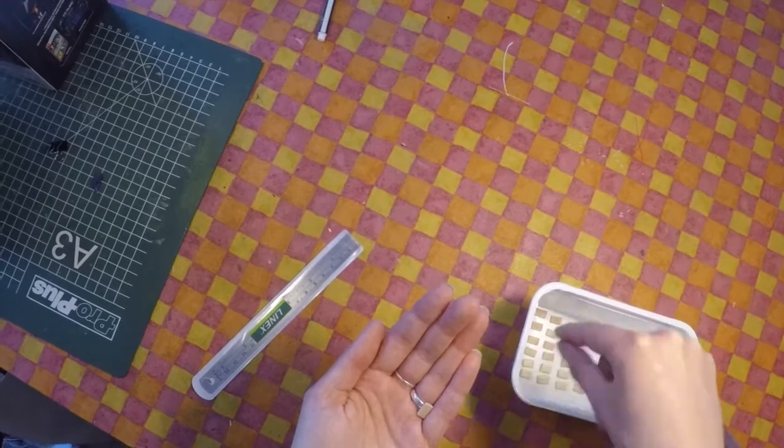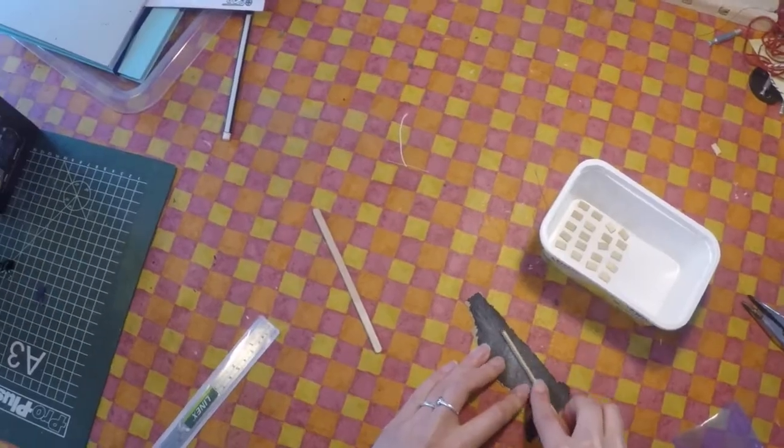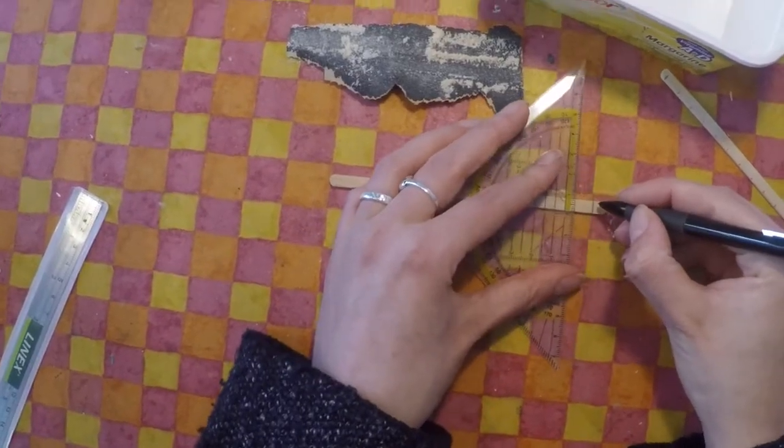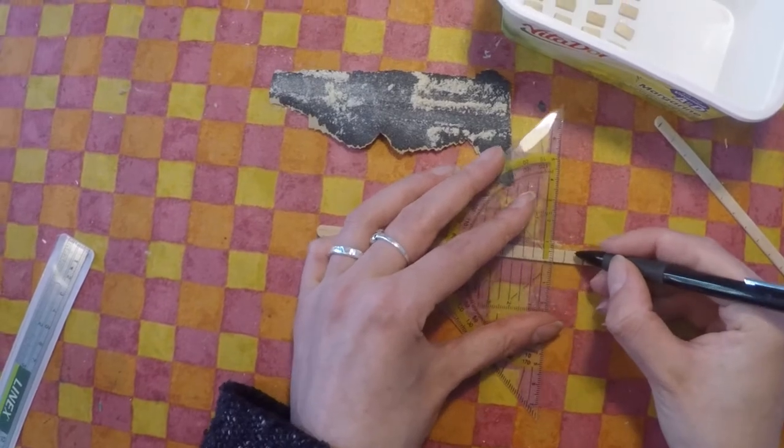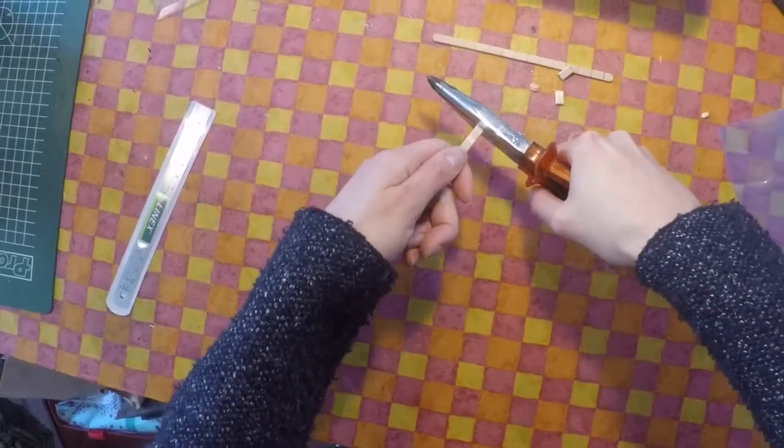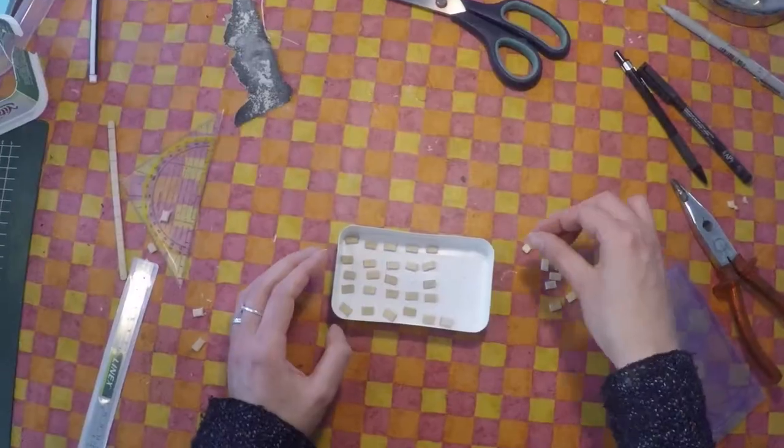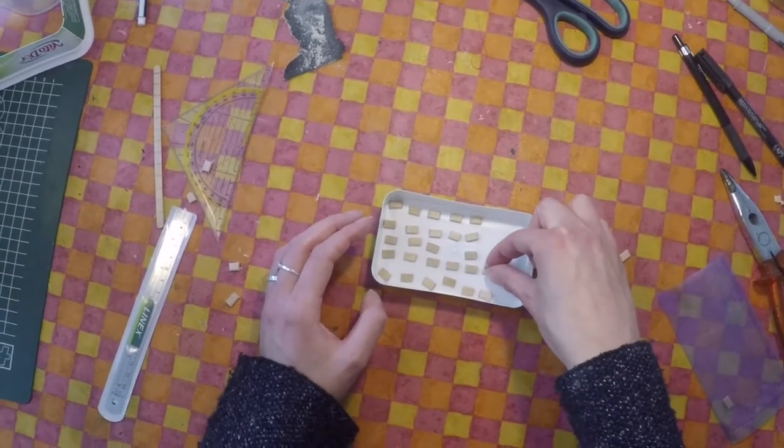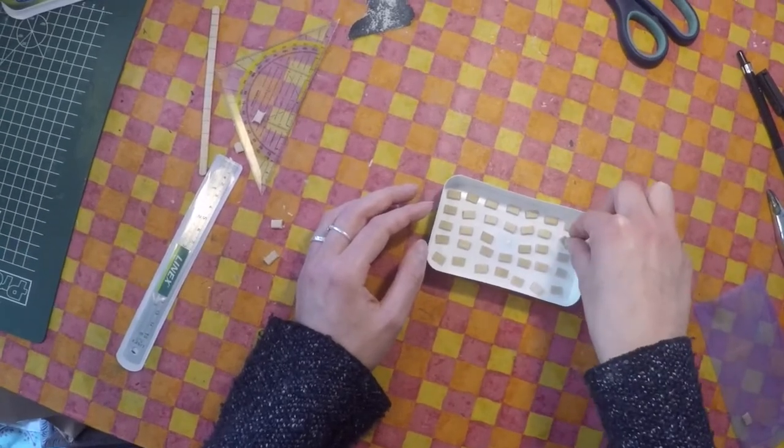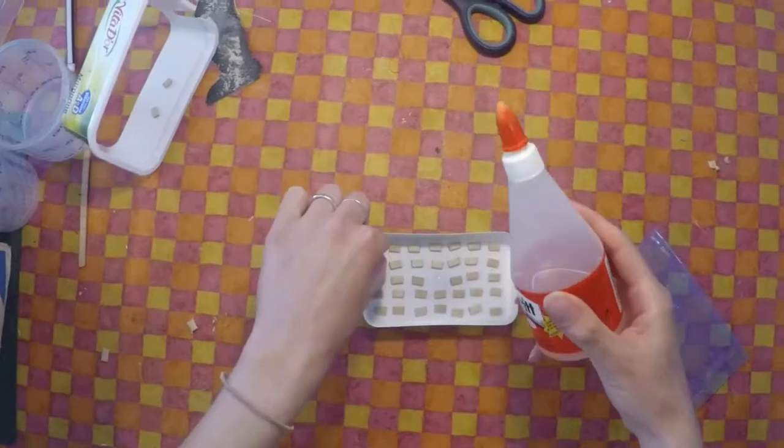While we're waiting for past me to make some more pieces, I just wanted to apologize for the grainy camera footage. After I filmed everything, I discovered the ISO levels was set way too high, so most of the footage turned out to be kind of grainy. Next time I'll make sure to check the camera settings before I start recording. Unless I forget. I'll probably forget.